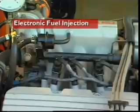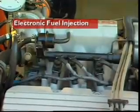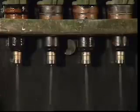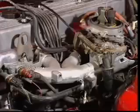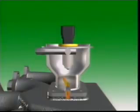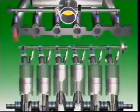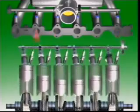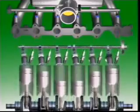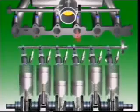This section examines basic EFI systems. EFI systems use electronically controlled injectors to spray the fuel. There are two basic systems: throttle body injection, also called single point injection, and multi-point injection. Throttle body injection sprays fuel into the air as it passes through to the intake manifold. Multi-point injection has an injector for each cylinder which sprays fuel directly into the intake valve port.